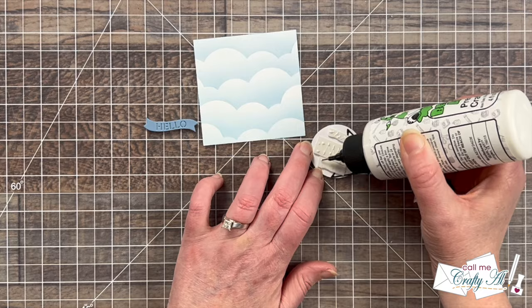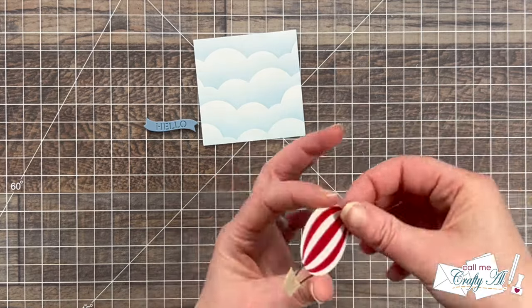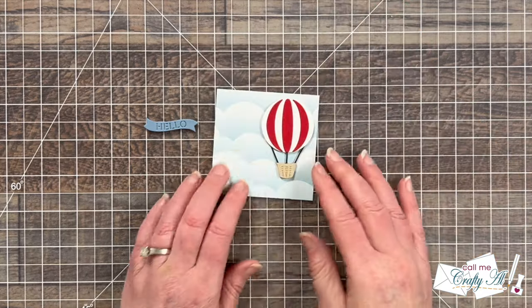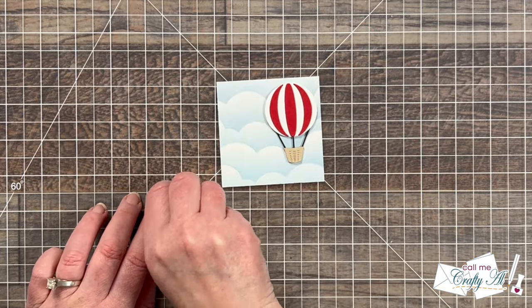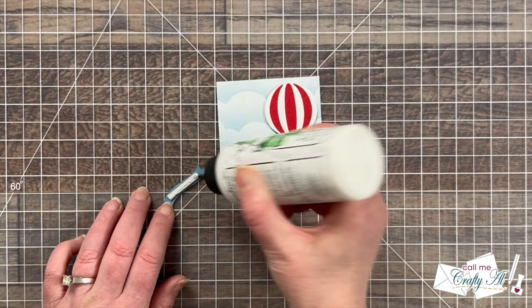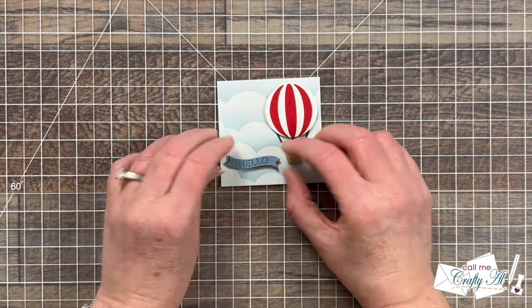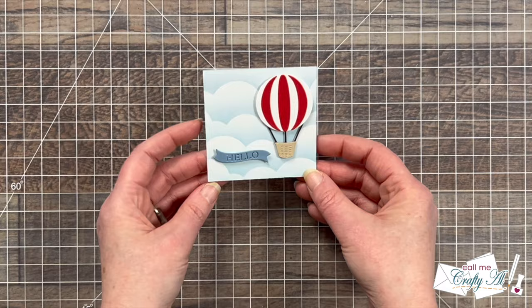I wanted to make it look like the hot air balloon was floating so I did put it in the upper right hand corner of the square and then I added the banner over on the lower left. Each time I added some liquid glue to the back of the foam tape so I had some time to adjust it and get it just right.